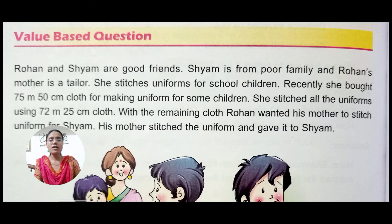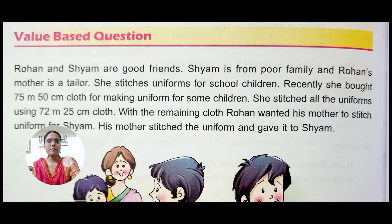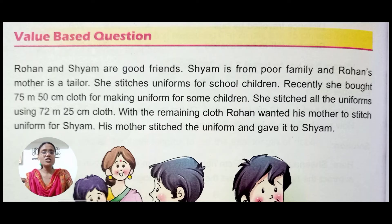Rohan and Shyam are good friends. Shyam is from a poor family and Rohan's mother is a tailor. She stitches uniforms for school children. Recently she bought 75 meter 50 centimeter of cloth. She stitched all the uniforms using 72 meter 25 centimeter cloth. With the remaining cloth, Rohan wanted his mother to stitch a uniform for Shyam. His mother stitched the uniform and gave it to Shyam.